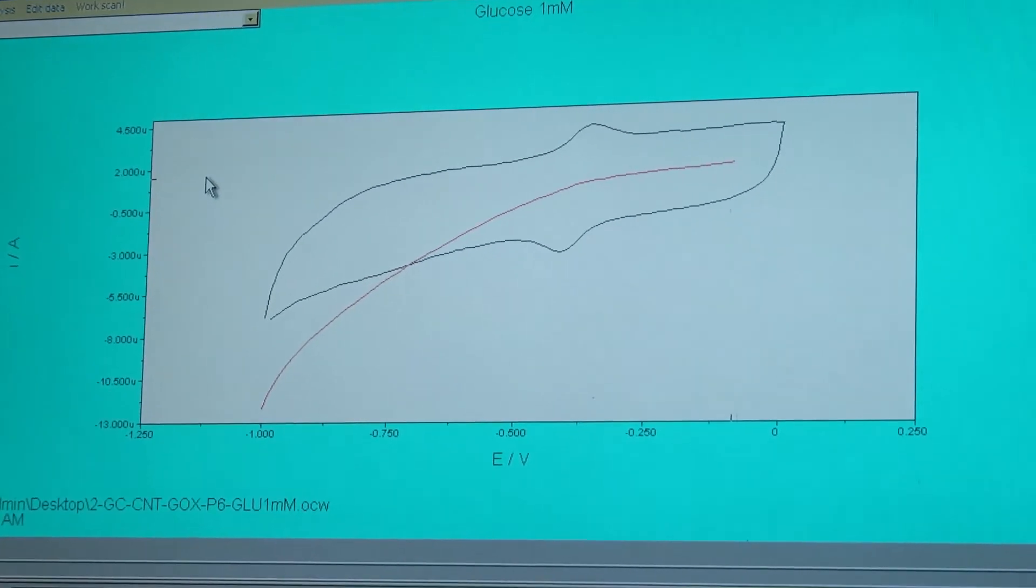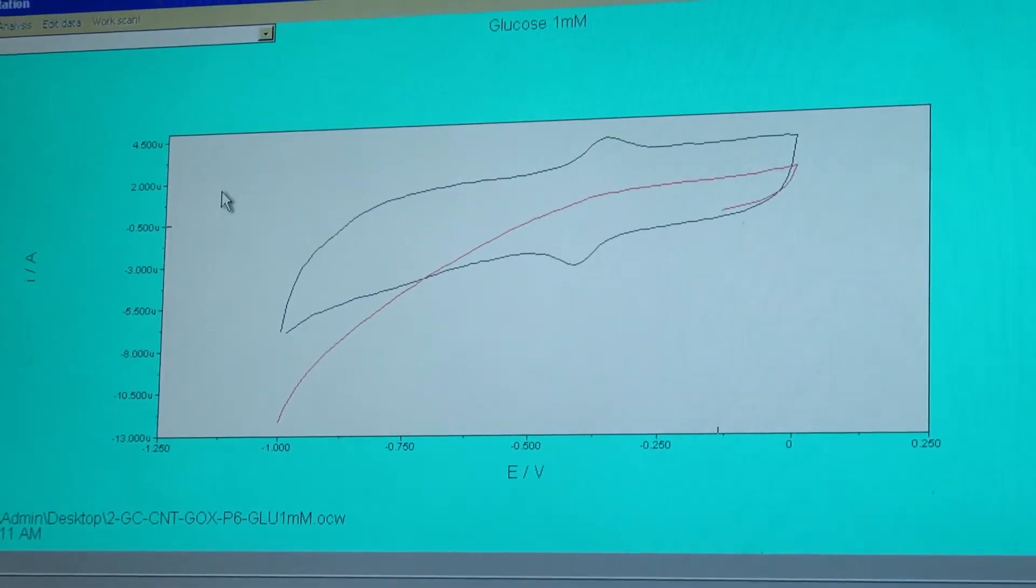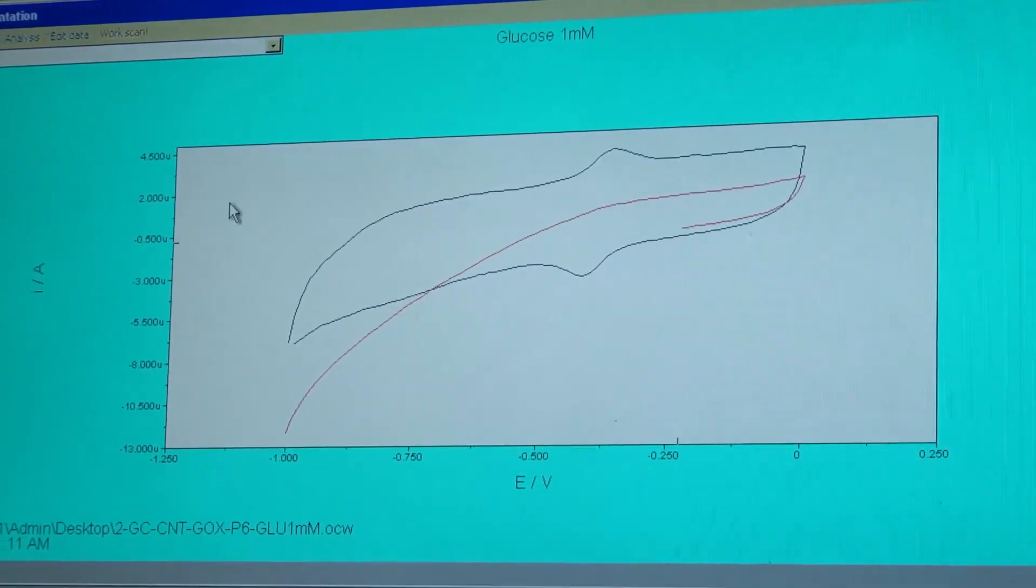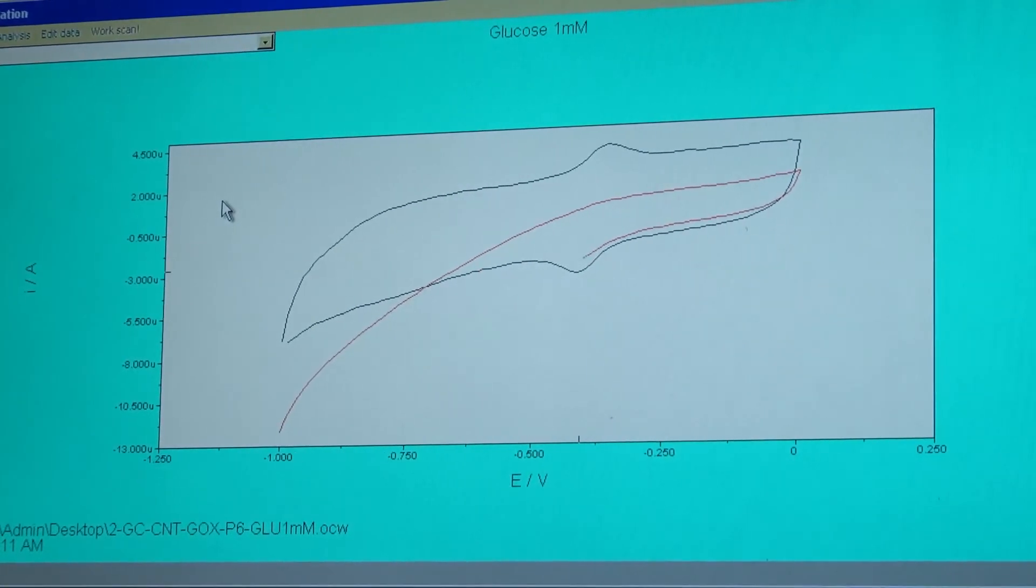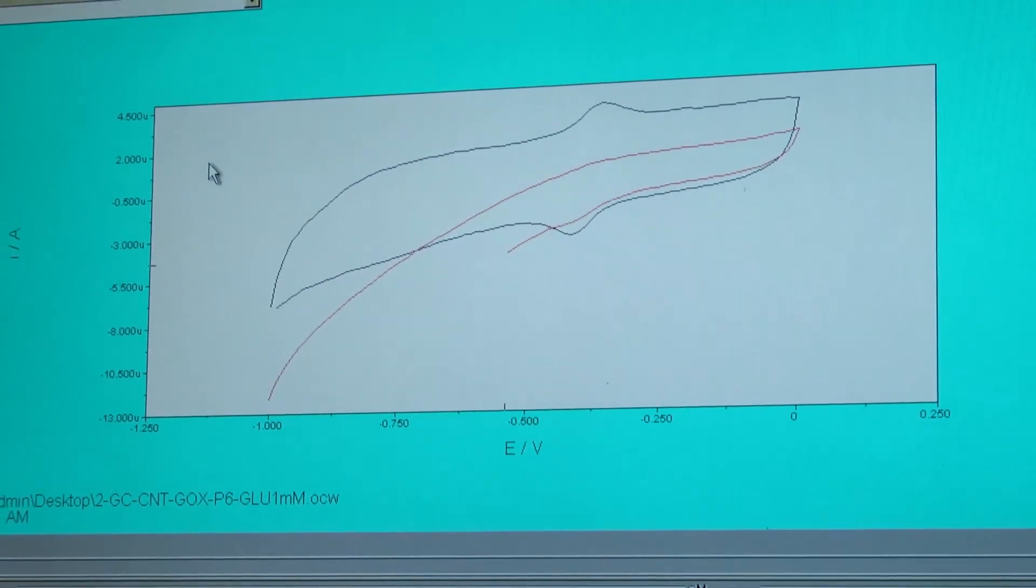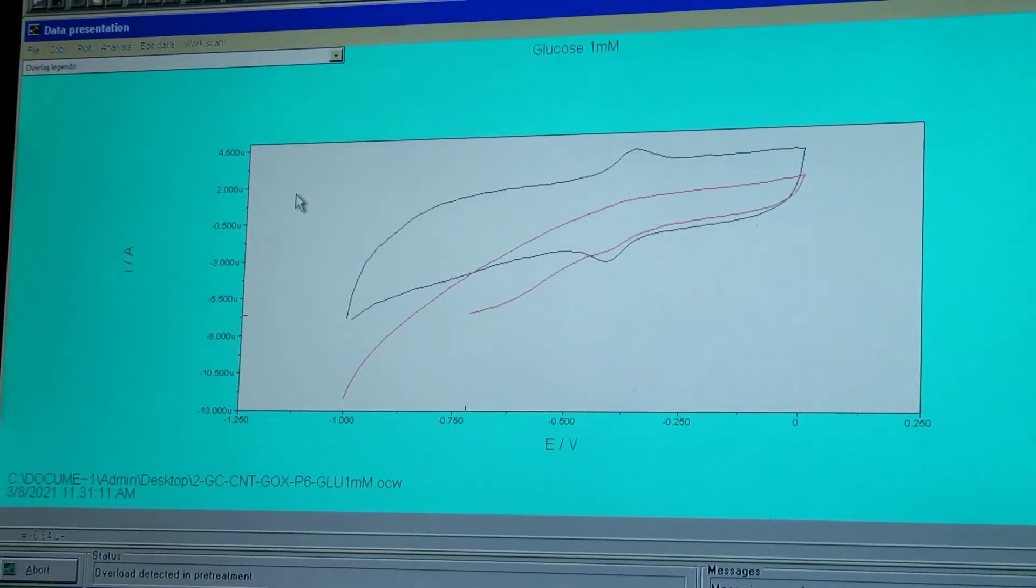The enzyme glucose oxidase reacts with the analyte glucose producing gluconolactone and hydrogen peroxide. Hence, by systematically monitoring the increase in current due to enhanced reduction of hydrogen peroxide, the glucose level could be determined using electrochemical method.